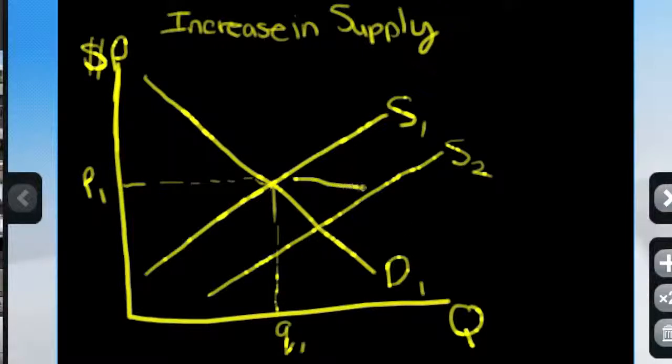So supply has increased to this value. So if we go along the supply curve and where that meets the demand, this is the new quantity.